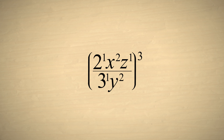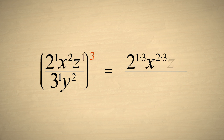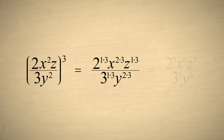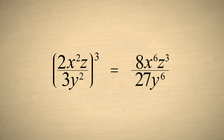Remember that terms without exponents actually have an exponent of one. Since this entire expression is raised to the third power, we multiply the exponent of every term in the expression by three. As a final step, we can write two cubed as eight, and three cubed as twenty-seven. This expression is now written in its simplest form.